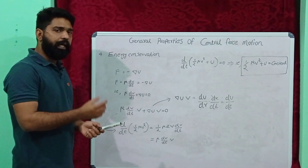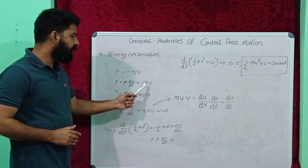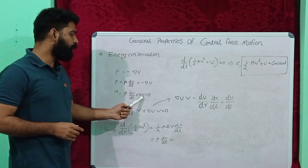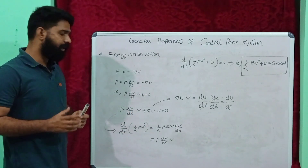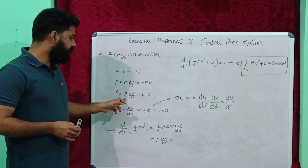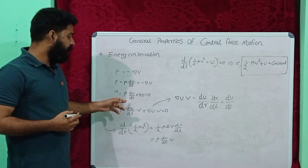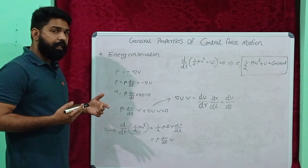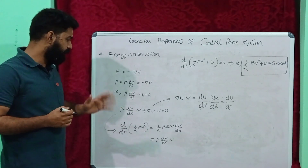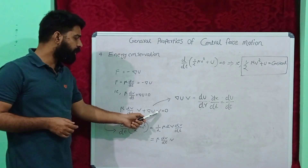When we take the minus delta U term to the left side of the equation, it becomes plus delta U. So mu dv by dt plus delta U equals zero. Then we multiply this equation with V, or we take the dot product with V. That means mu dv by dt dot V plus delta U dot V equals zero.